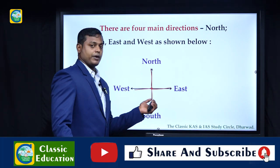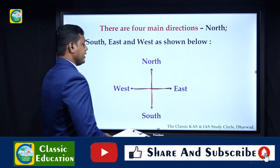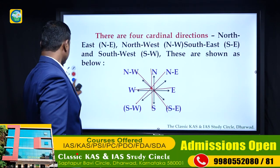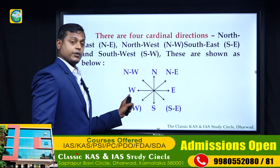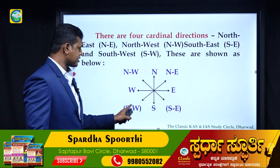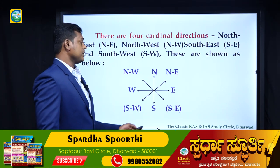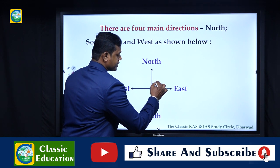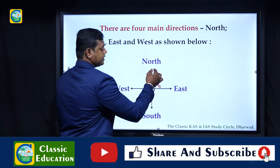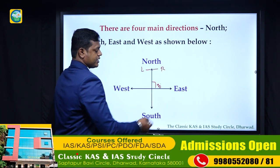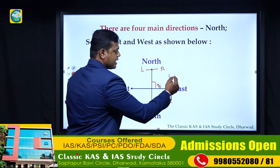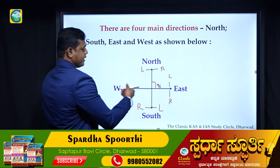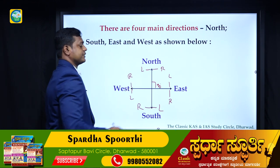Beyond the four main directions - north, south, east, west - there are four more sub-directions: northeast, southeast, southwest, and northwest. Each main section has a 90-degree angle. If you are facing north, right is east and left is west. If facing east, right is south and left is north. If facing south, right is west and left is east. If facing west, right is north and left is south.